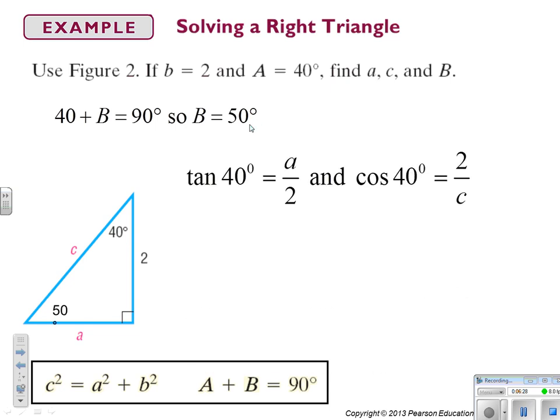I can find side A by using tangent. So the tangent of 40 degrees, which is opposite over adjacent, or A over 2. That'll give me A. I multiply both sides by 2, and A is equal to 2 times the tangent of 40 degrees, which is approximately 1.68. So let's put that in our triangle.